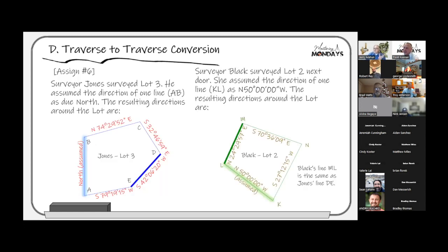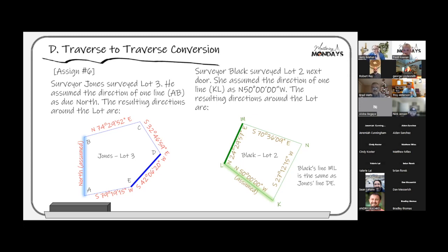Here's an example of two adjacent surveys. Surveyor Jones surveyed lot 3 and assumed line AB as north because it looked like it ran north. He did his survey, adjusted it, and got bearings around the property. Then Surveyor Black came along and surveyed lot 2 next door, assuming line KL as N50°W because it looked like it ran in that direction, ran the survey, adjusted it, and got those bearings. On a project-by-project basis these are fine — consistent directions, everything matches.